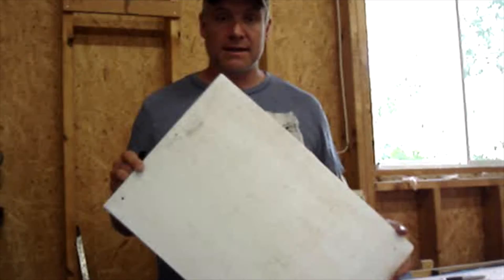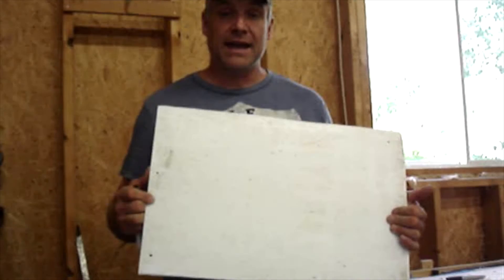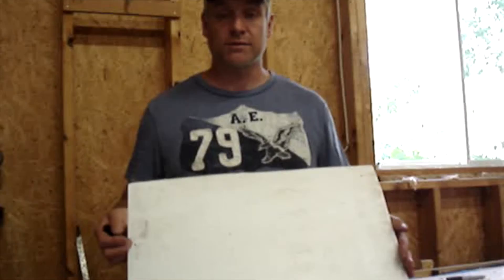Whenever the campaign is done, you go pick up these campaign signs. You get them pretty much for free. You cut them up to fit the bottom of your hives, put a Crisco and Vaseline mixture on them, and there you go. You can check your Varroa mite threshold levels.